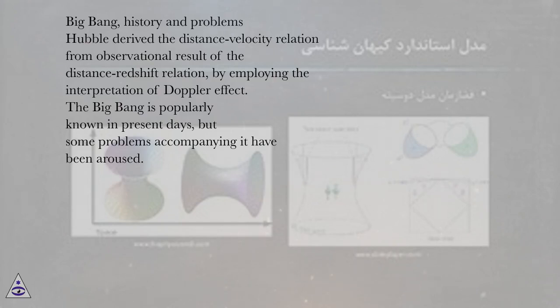Big Bang, History and Problems. Hubble derived the distance-velocity relation from observational result of the distance-redshift relation by employing the interpretation of Doppler effect. The Big Bang is popularly known in present days, but some problems accompanying it have been aroused.